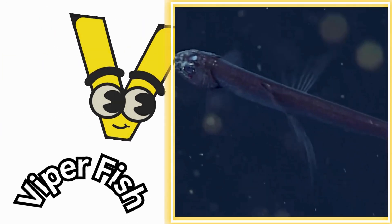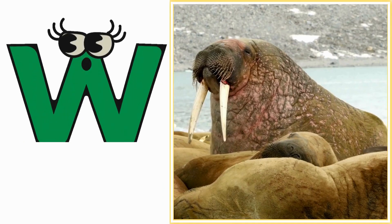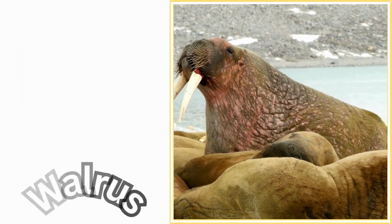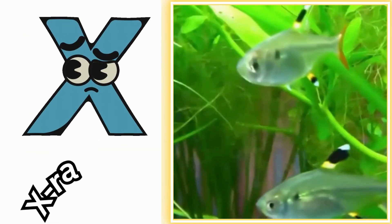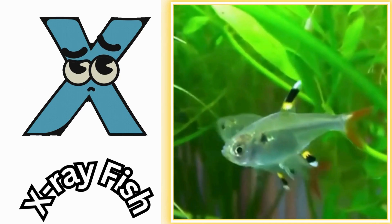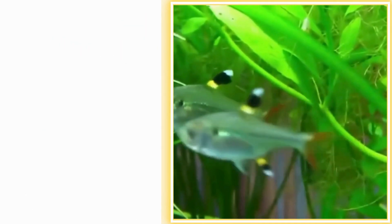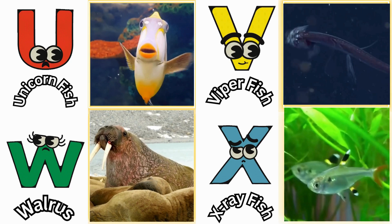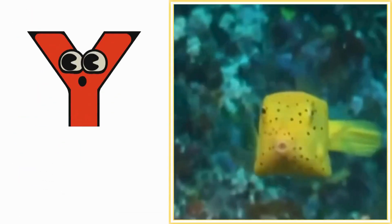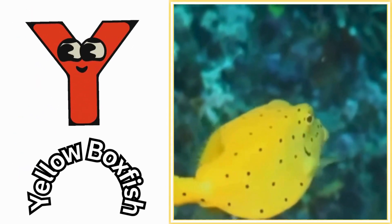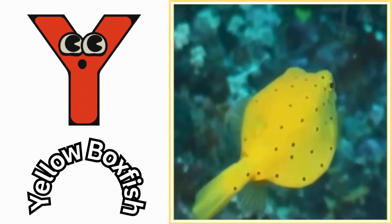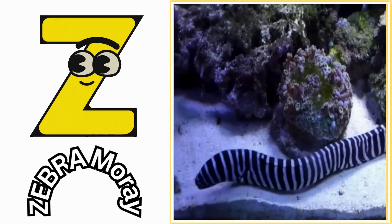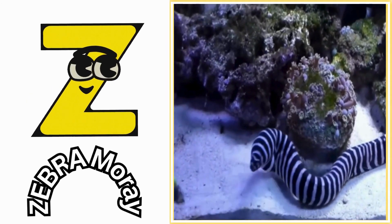V is for viperfish. Vuh, viperfish. W is for walrus. Wuh, walrus. X is for x-ray fish. Z, x-ray fish. Y is for yellow boxfish. Ya, yellow boxfish. Z is for zebra moray. Z, zebra moray.